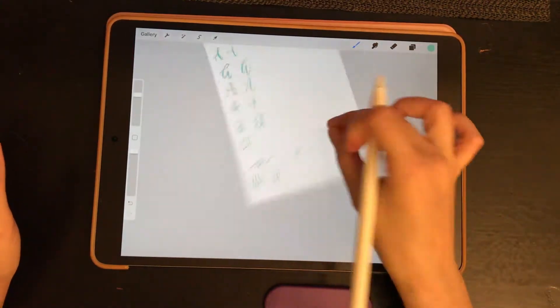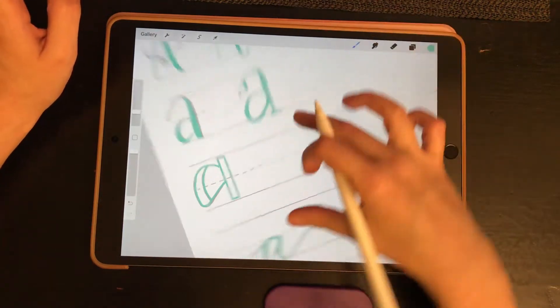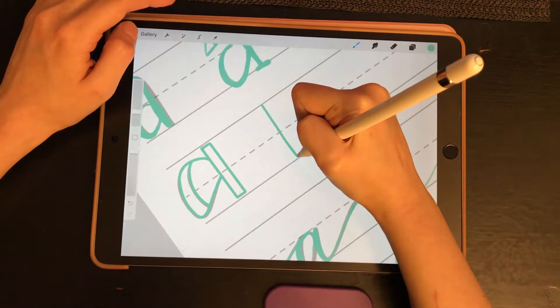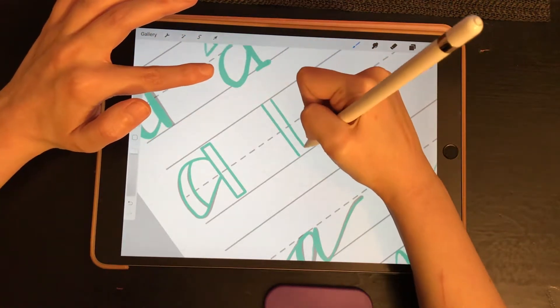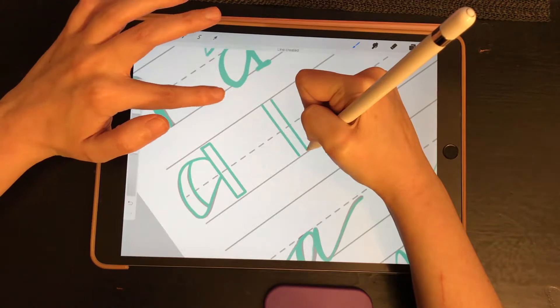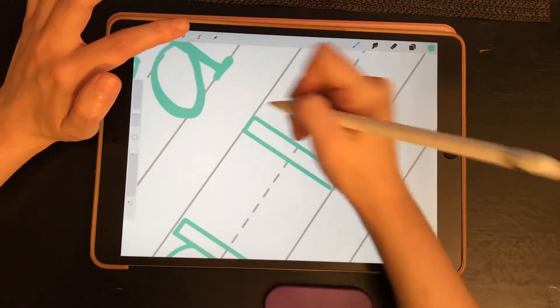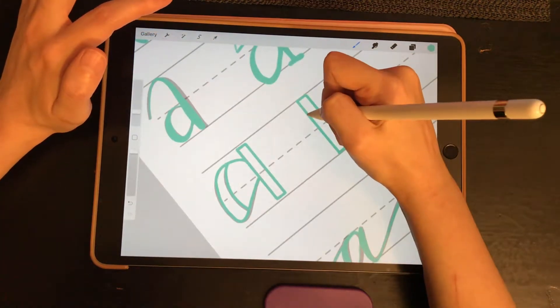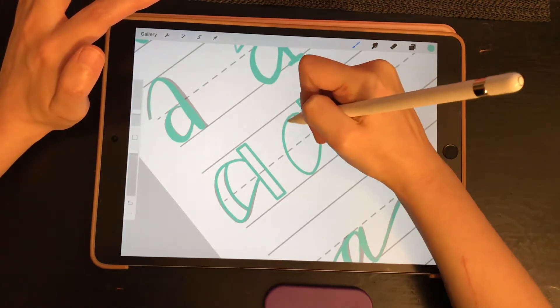The possibilities are endless. And one thing that I love about this, I am using a mono line for this one, is if you just hold your Apple Pencil if you're using Procreate and then tap, it'll make your line perfectly straight.